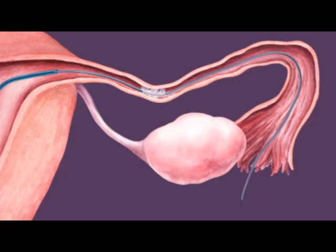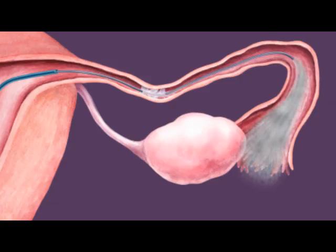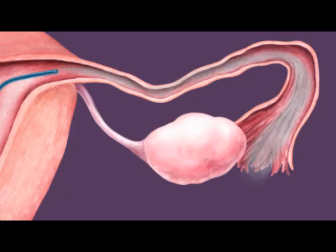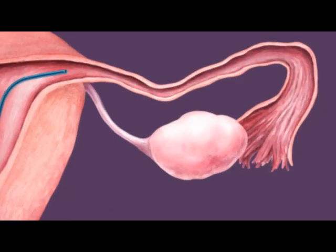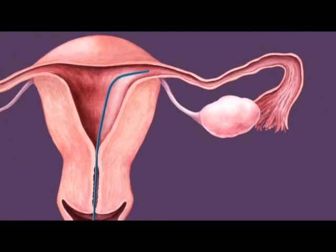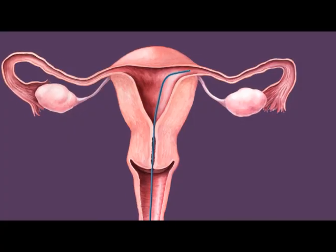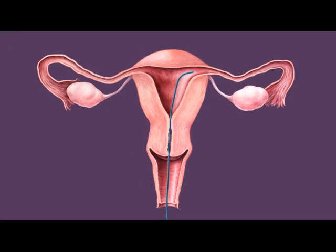As the micro-catheter is withdrawn, saline solution is pumped through it into the fallopian tube. The pressure of the saline solution will clear any remaining debris that caused the blockage, leaving behind an open tube. Finally, dye is again injected into the endometrial cavity to check that both fallopian tubes are now completely open.